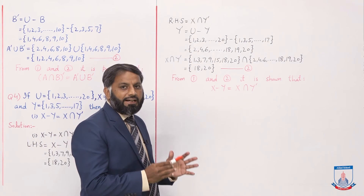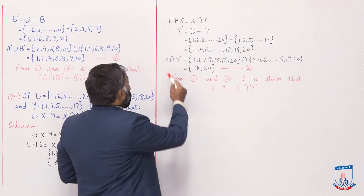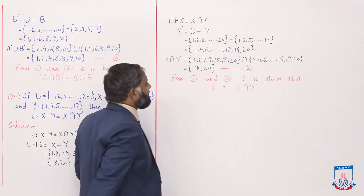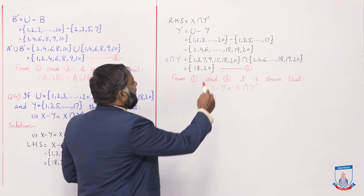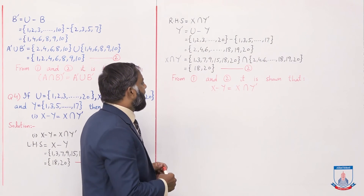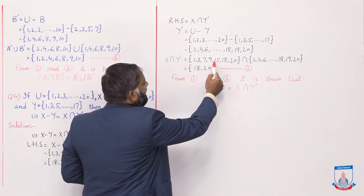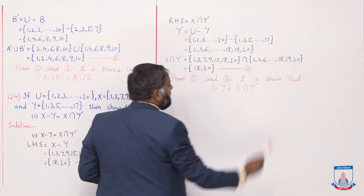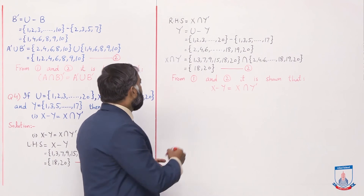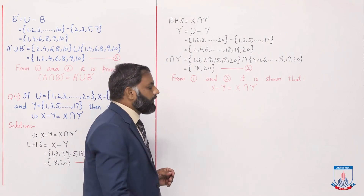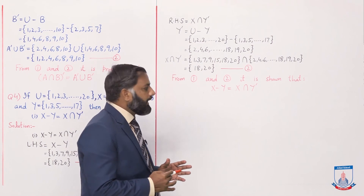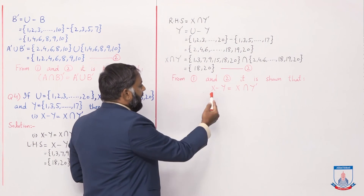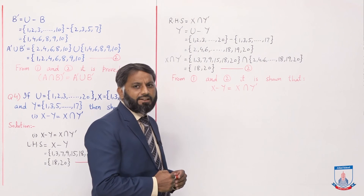Now we take X∩Y': set X intersection the Y' set we found. The common elements of both sets — all odd up to 15 are in X but none of those appear in Y', so simply {18, 20} are the two elements common in both sets. So X∩Y' = {18, 20}. Right hand side solved, called equation 2. From equation 1 and 2, it is shown that X minus Y = X∩Y'.